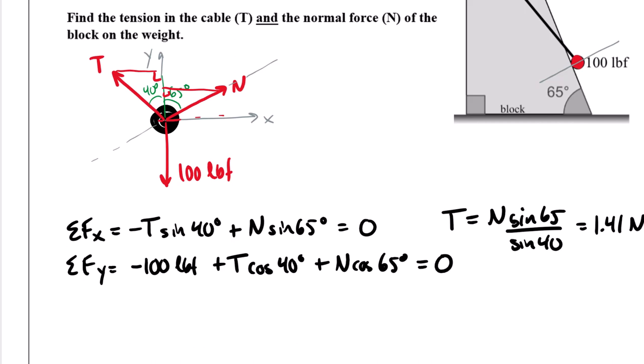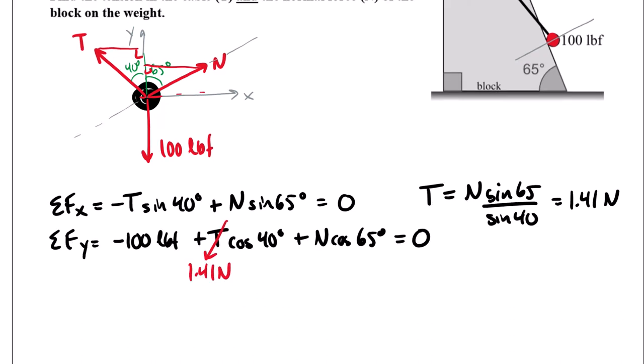So the N can come down here and anytime we see a T, we could substitute in our 1.41 times N. So after this substitution, we can move the 100 pound force over to the right hand side. So here's my 100 pound force over here. I take my 1.41 and I'm going to multiply that times the cosine of 40. So grabbing that on my calculator times cosine of 40, we end up with 1.08. And then add to that the cosine of 65. So plus cosine of 65, we end up with 1.50, and I'll put the three in there, times N.